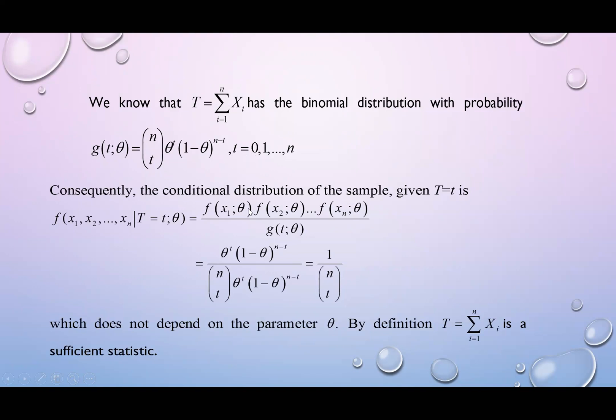So replace it in conditional distribution. It will result you as 1 over n choose t, which this one is your h(x1, x2, xn), which does not depend on the parameter theta. Therefore, we conclude that T equals to sum xi is a sufficient statistic.